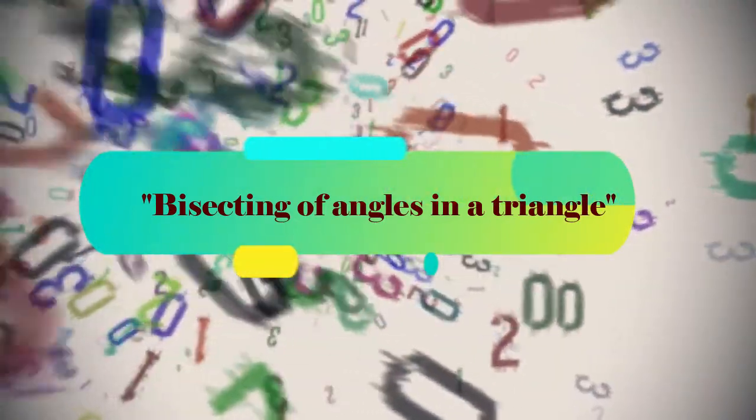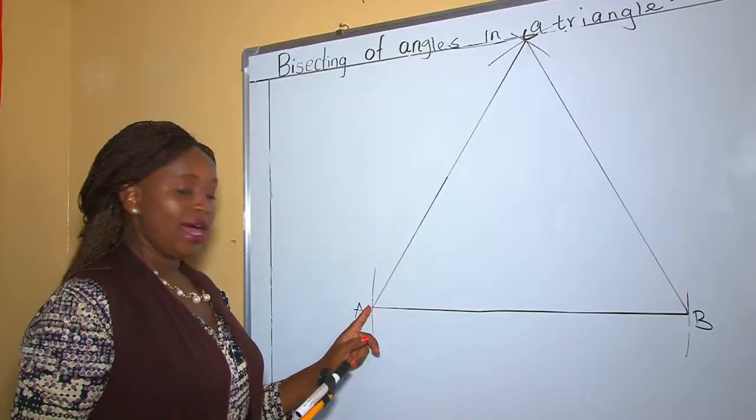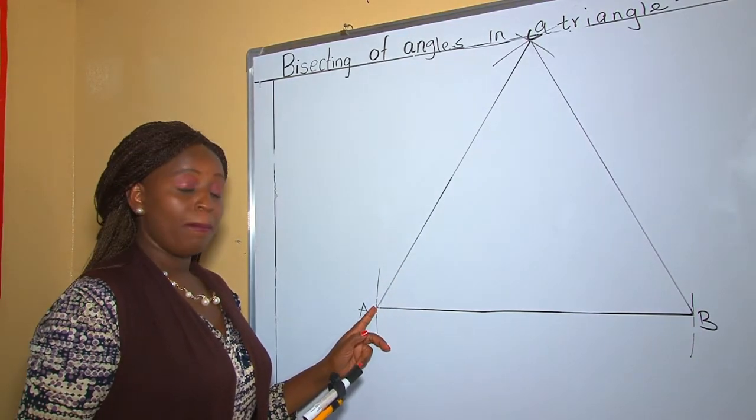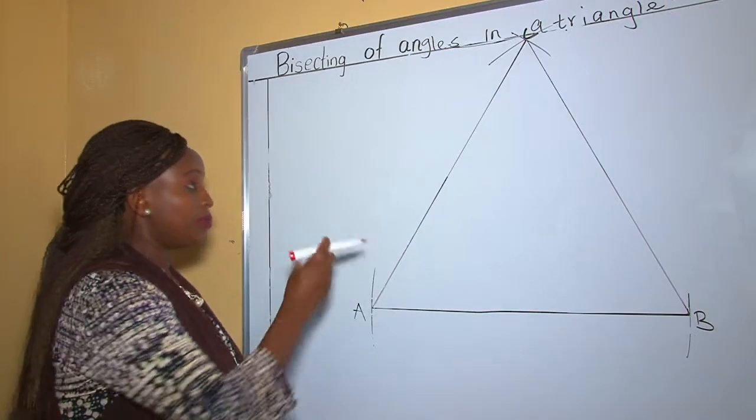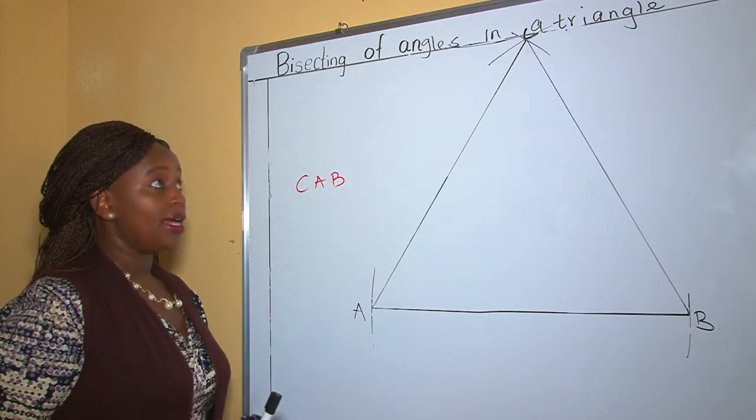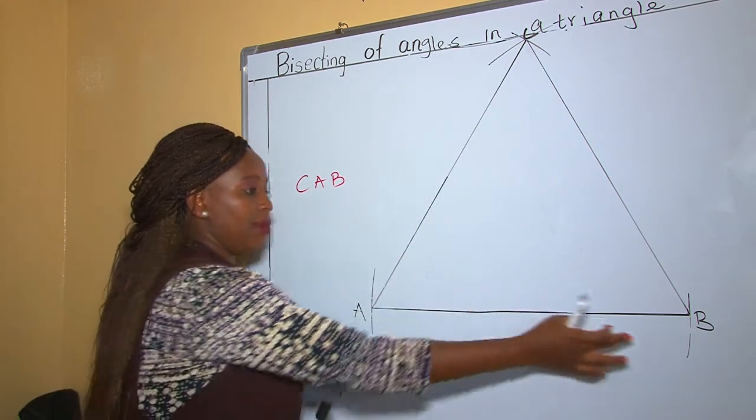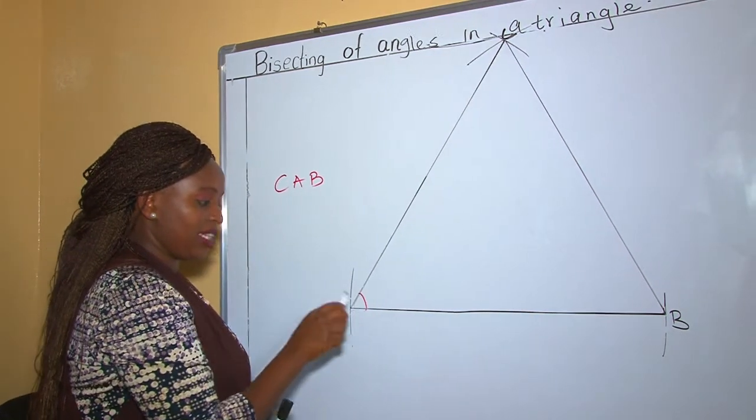Now from a previous lesson, we learned that an angle is formed by two lines intersecting at a given point. Let's take angle CAB, which is made by line CA and line BA. When these two lines intersect, they form that angle.